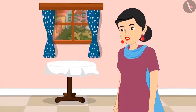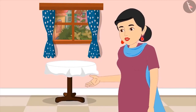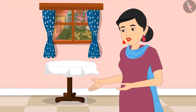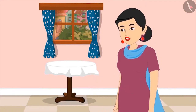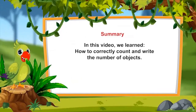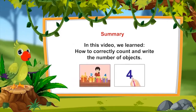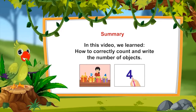Now quickly put the rest of the fruits back and wash your hands. So, that was all in this video. We learned how to correctly count and write the number of objects. I hope you all have understood counting from 1 to 5 properly. Bye, friends.